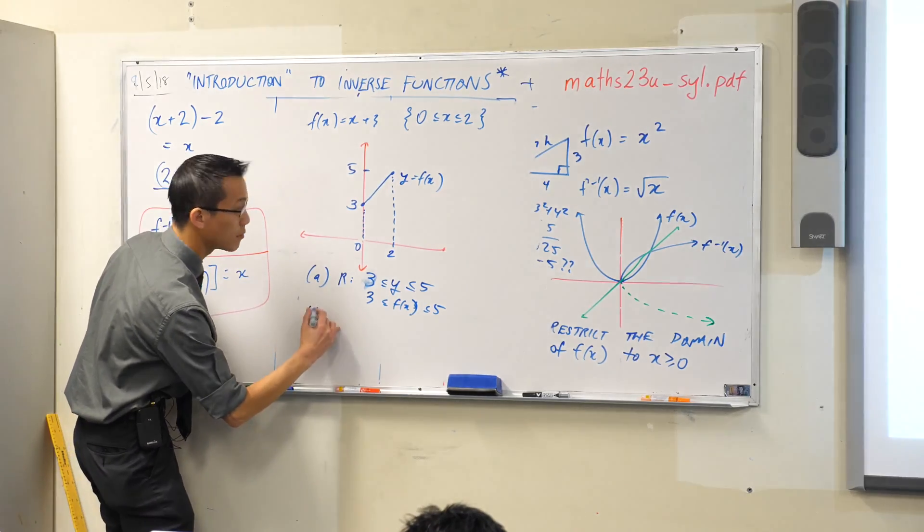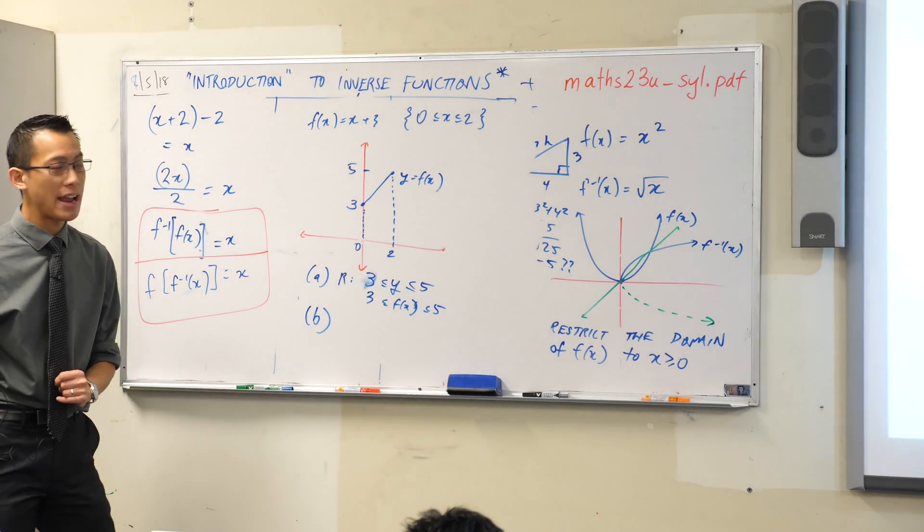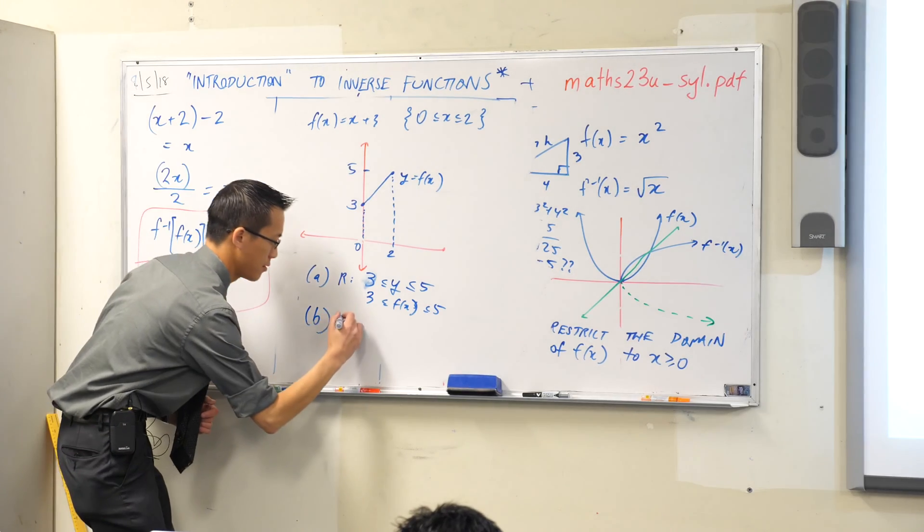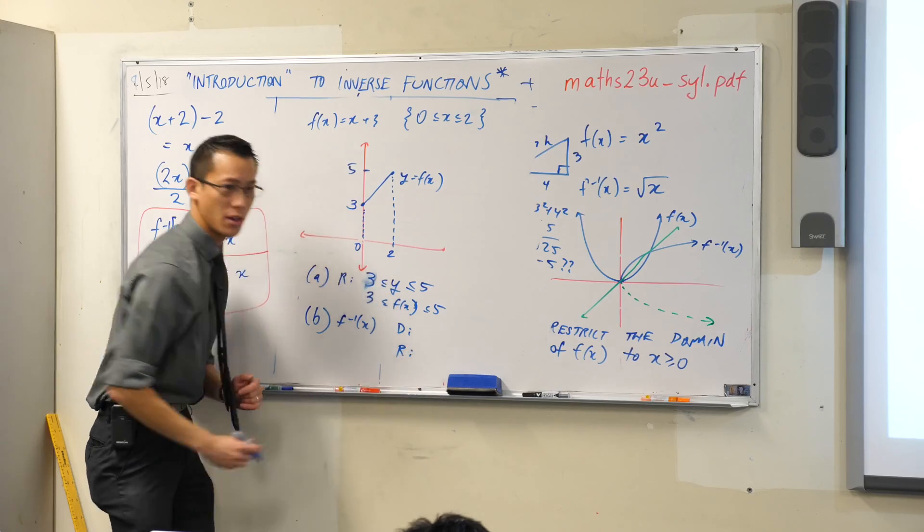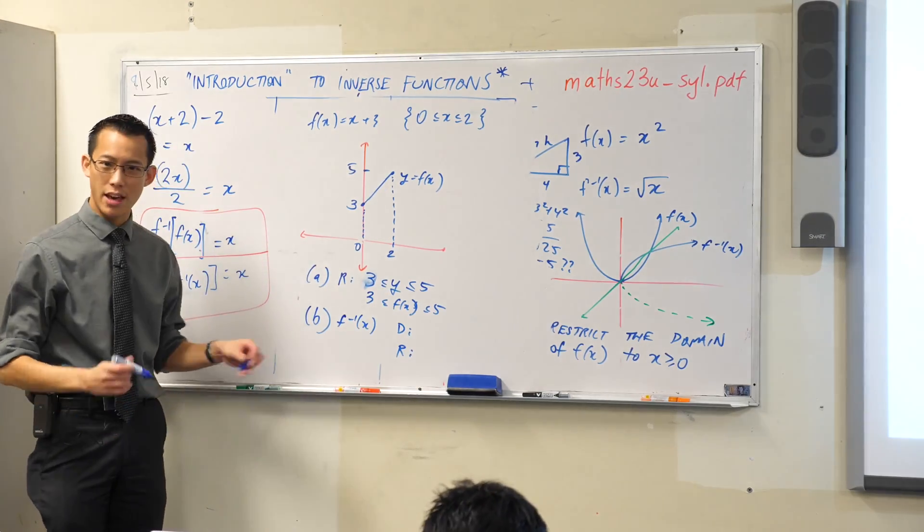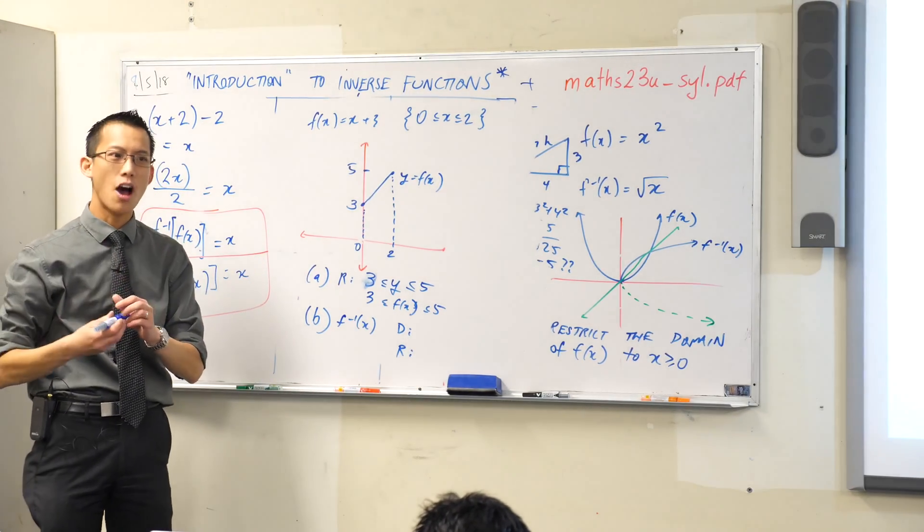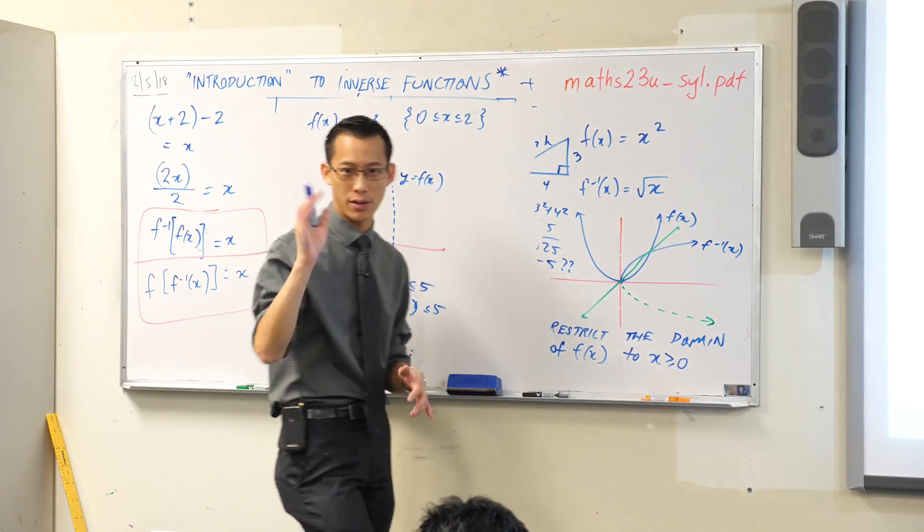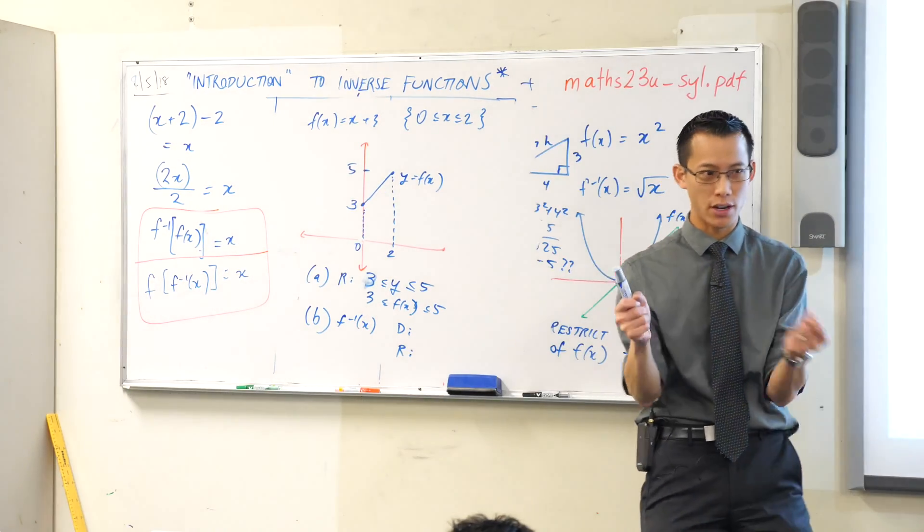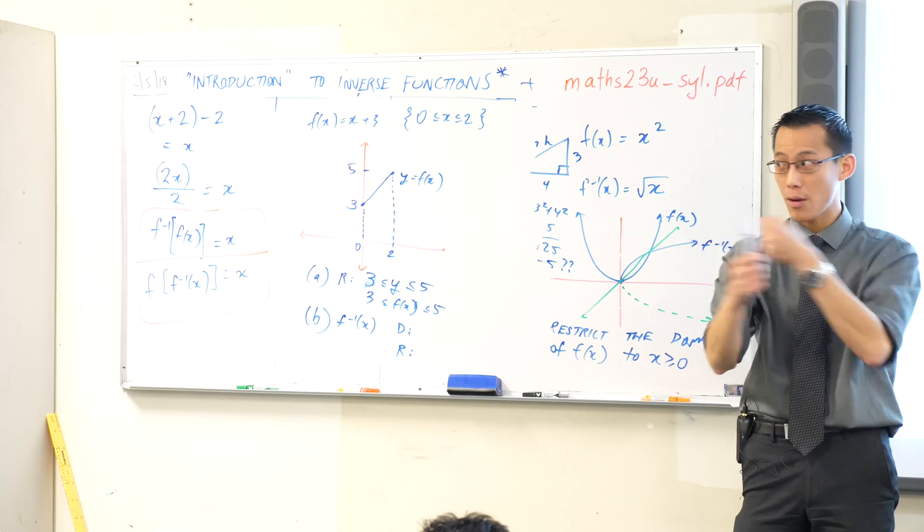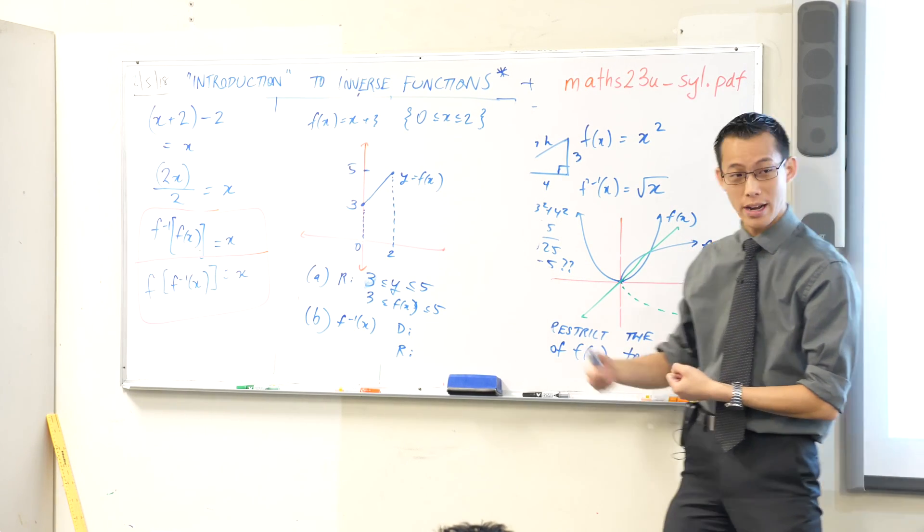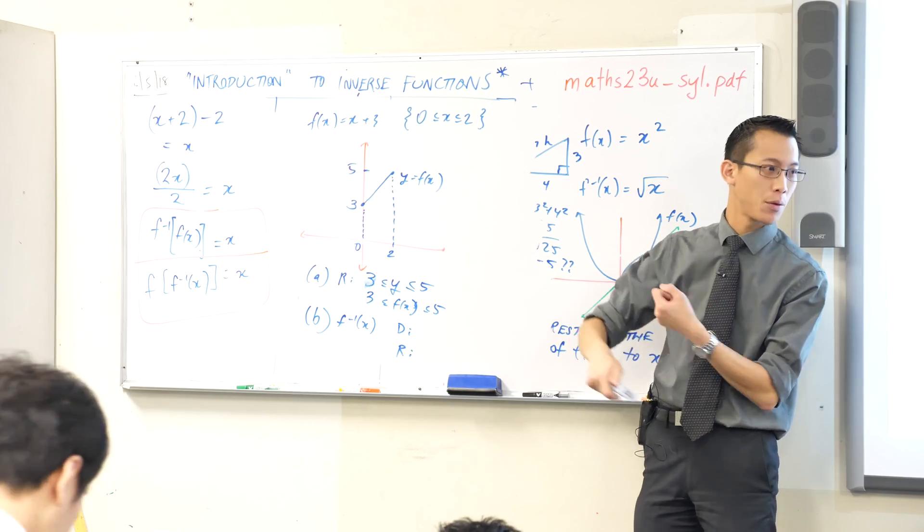What's part b asking? State the domain and range of f inverse. What did we say when we looked at the big table and we drew everything about algebraically the difference between a function and its inverse? What did we do with the variables? We swapped their places, right? We switched them around. So everywhere we saw an x, we put a y. Everywhere we saw a y, we put an x. Okay?